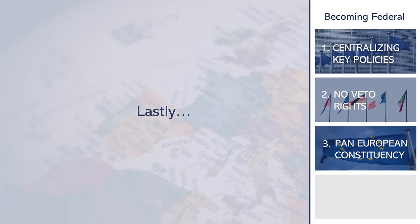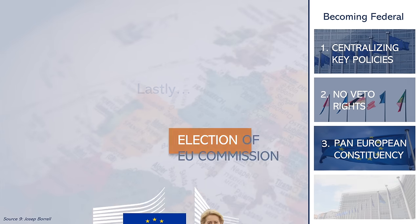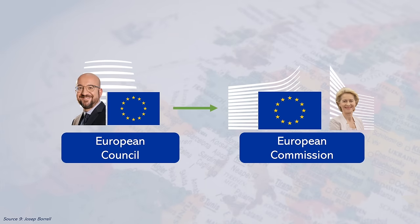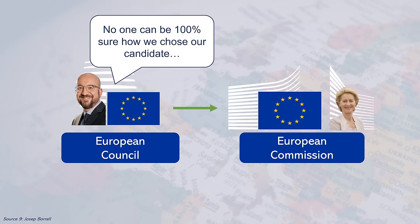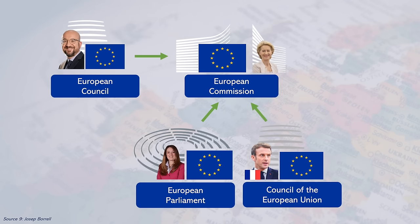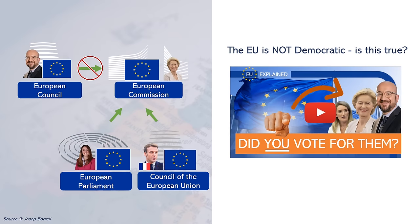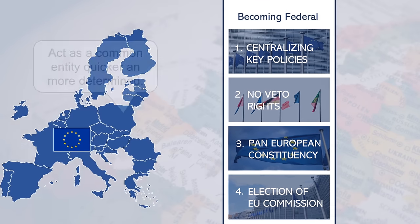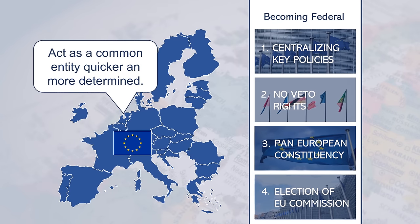Lastly, the European Commission President is currently elected by the European Council behind closed doors. To make the process more transparent and democratic, the European Parliament and Council should be involved. If these four areas are addressed, the EU could truly be called a federation.